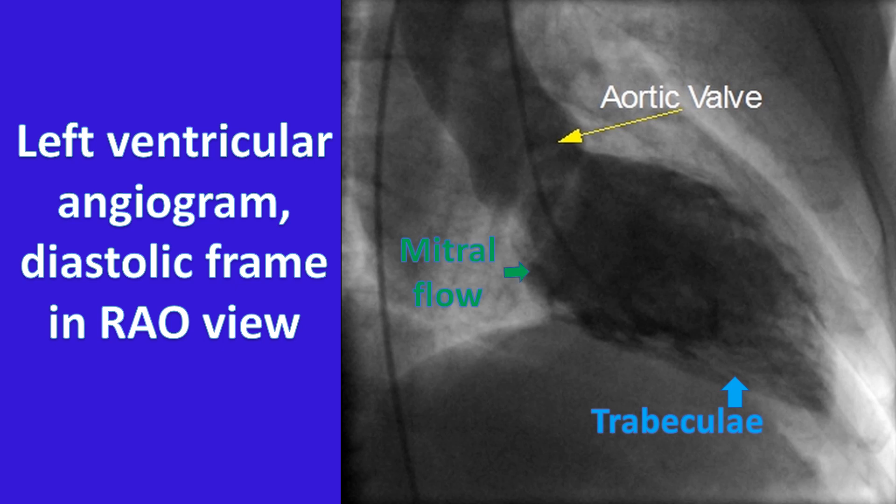A negative shadow of mitral diastolic flow can be seen at the posterobasal region. The thickness of the left ventricular wall can be assessed by noting the distance between the contrast-filled cavity and the cardiac silhouette, especially in the anterolateral region.